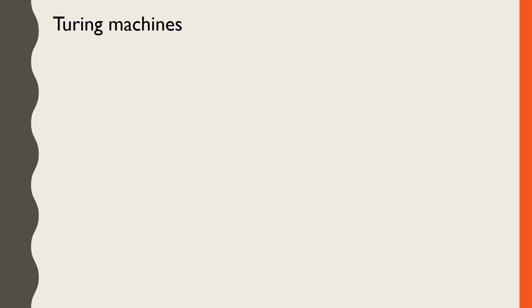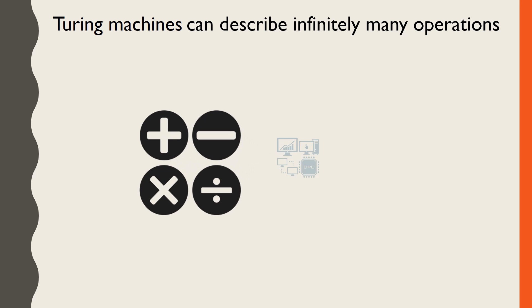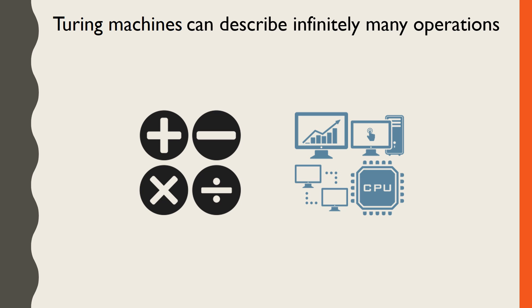The machine developed by Turing can mathematically describe any operation any modern computer can perform, just by following a few simple rules. In fact, it's capable of describing infinitely many operations, though not every conceivable operation is possible on a Turing machine. Turing machines find applications in mathematics and computer science as powerful yet simple explanatory tools.